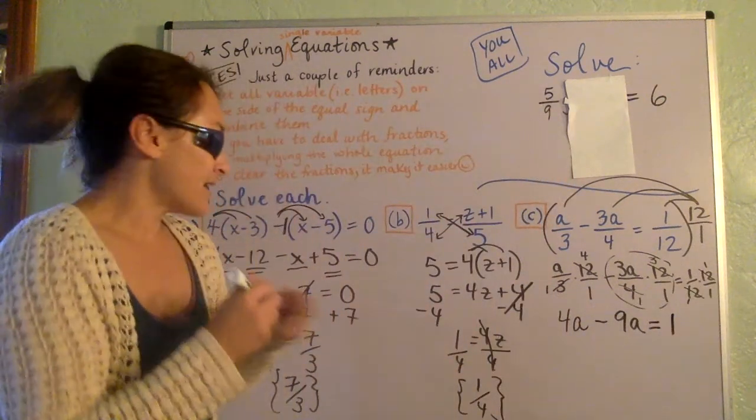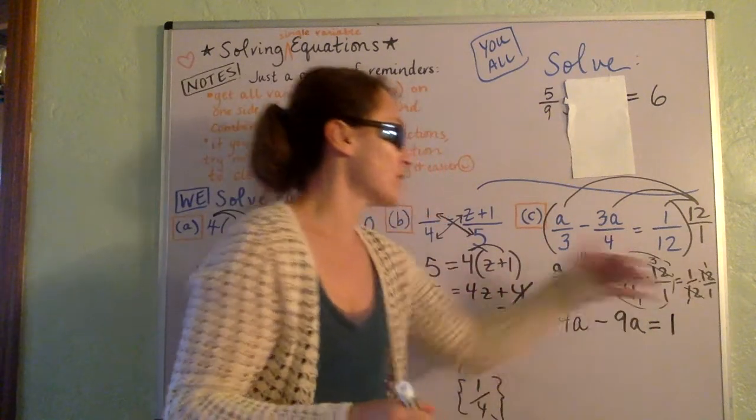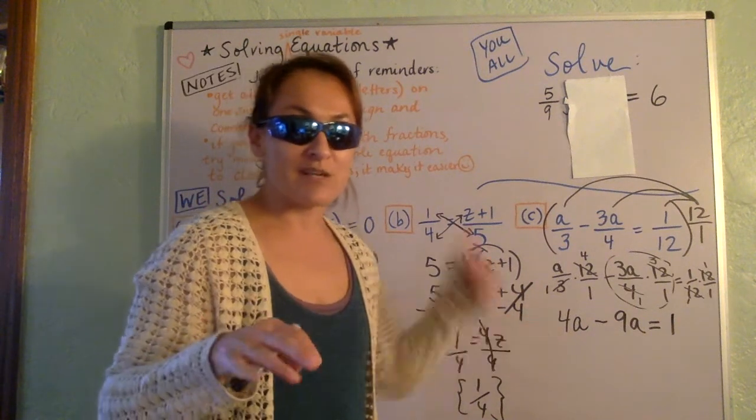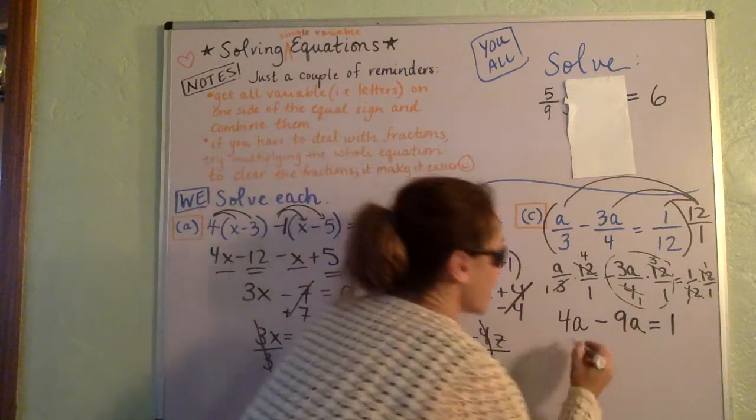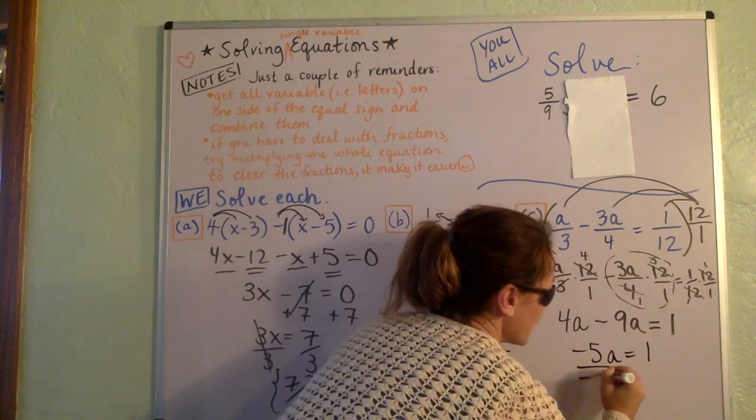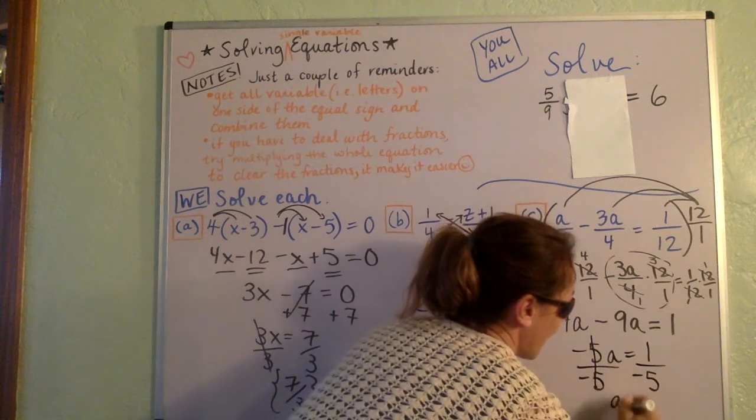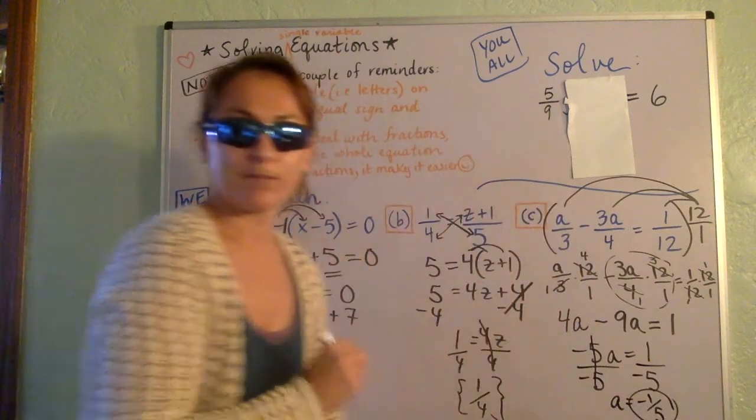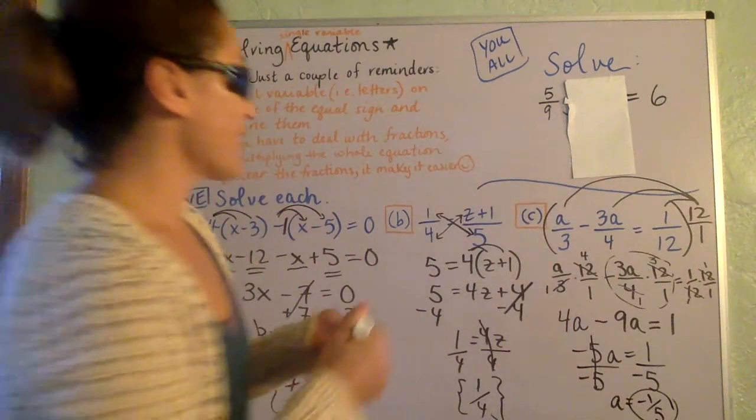And you see how now, by multiplying the whole equation by 12, now we're at an equation that doesn't have fractions anymore. Perfect. So let's combine these. That's negative 5a equals 1, and then we can just divide by negative 5, and we'll get that a is negative 1 fifth. All right, so here we go.